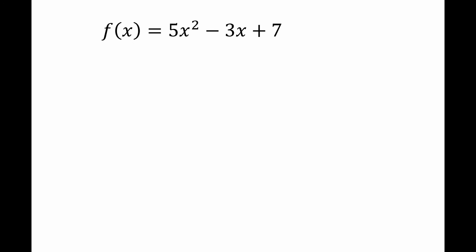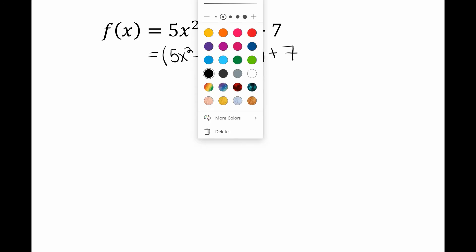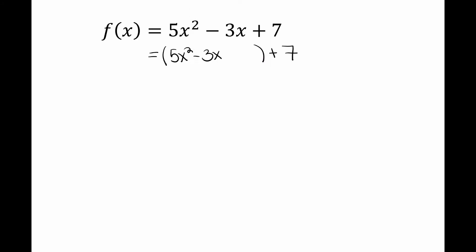Looking at another example: group together the variable terms 5x squared minus 3x. Notice there's a 5 in front of the x squared term — that 5 cannot be there — so we factor it out. Factoring 5 out of both 5x squared and 3x gives x squared minus 3 over 5 x inside the parentheses, because 5 divided by 5 is 1 and 3 divided by 5 is 3 over 5. When you factor out your 5 you end up getting a fraction.